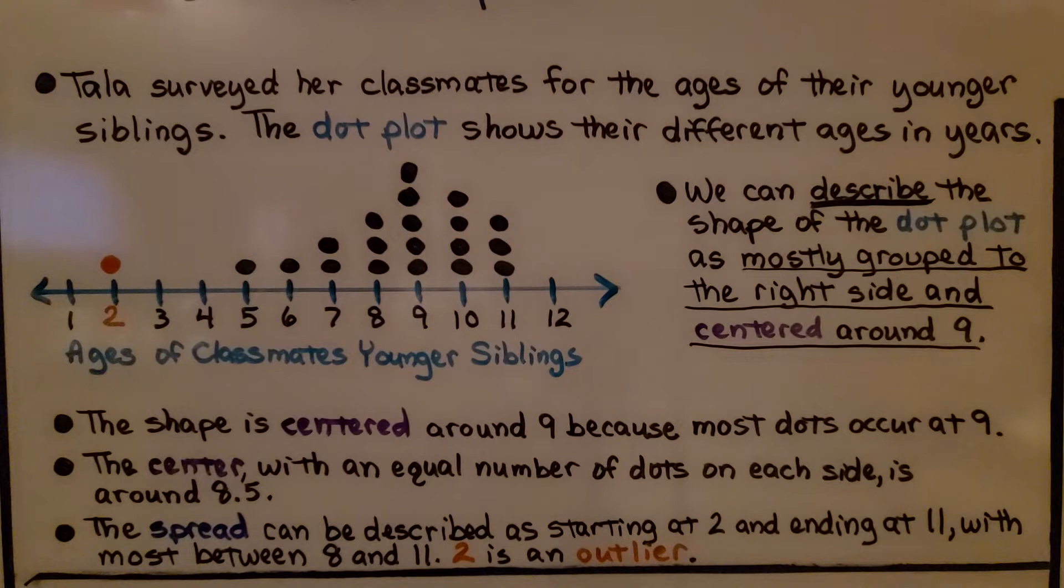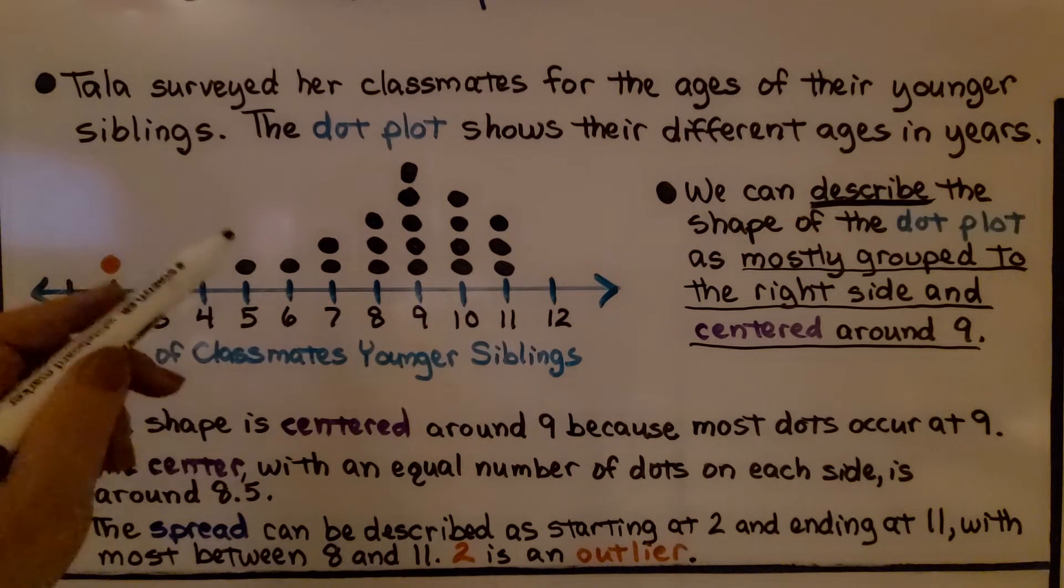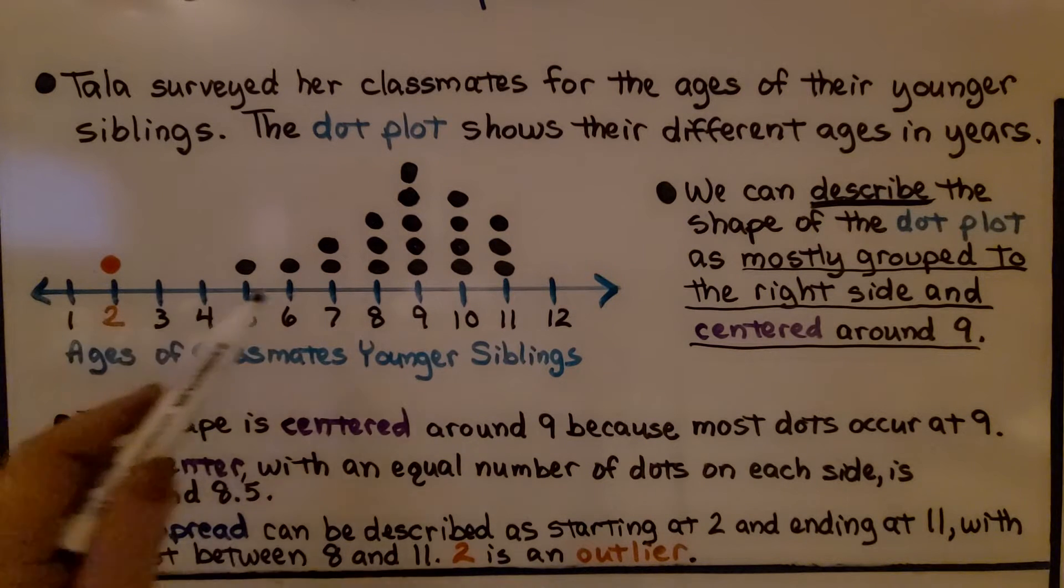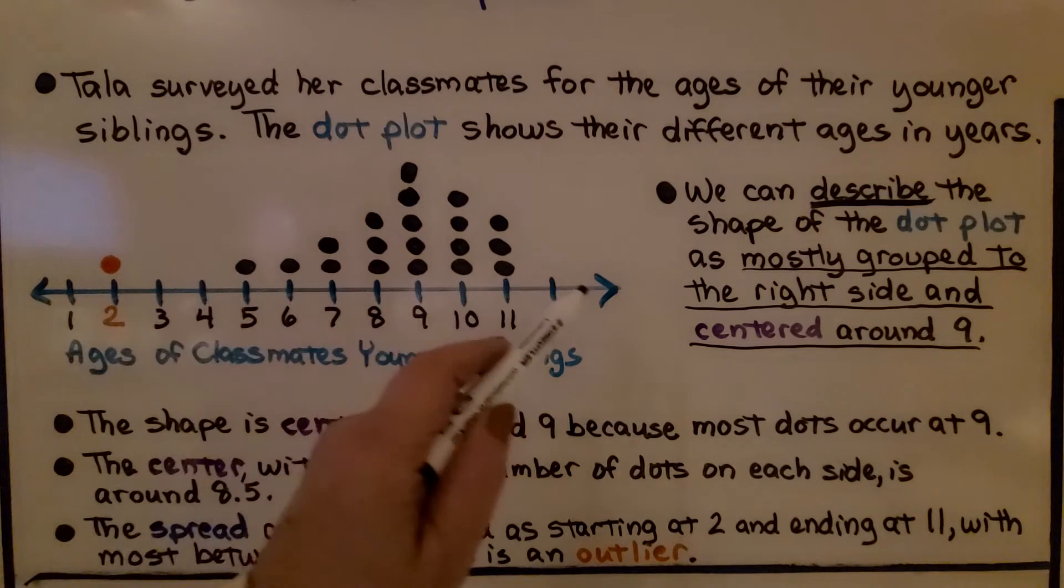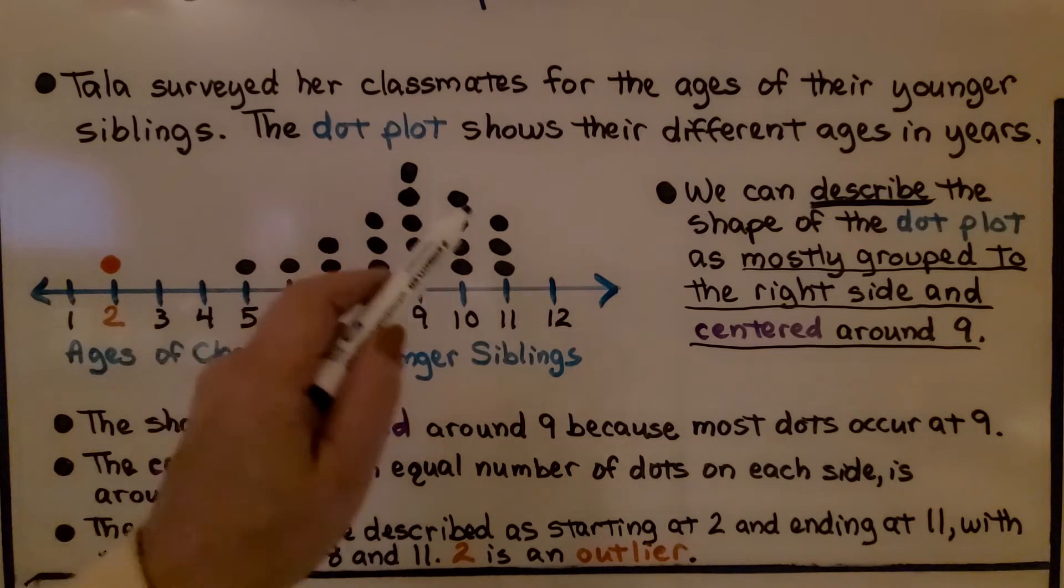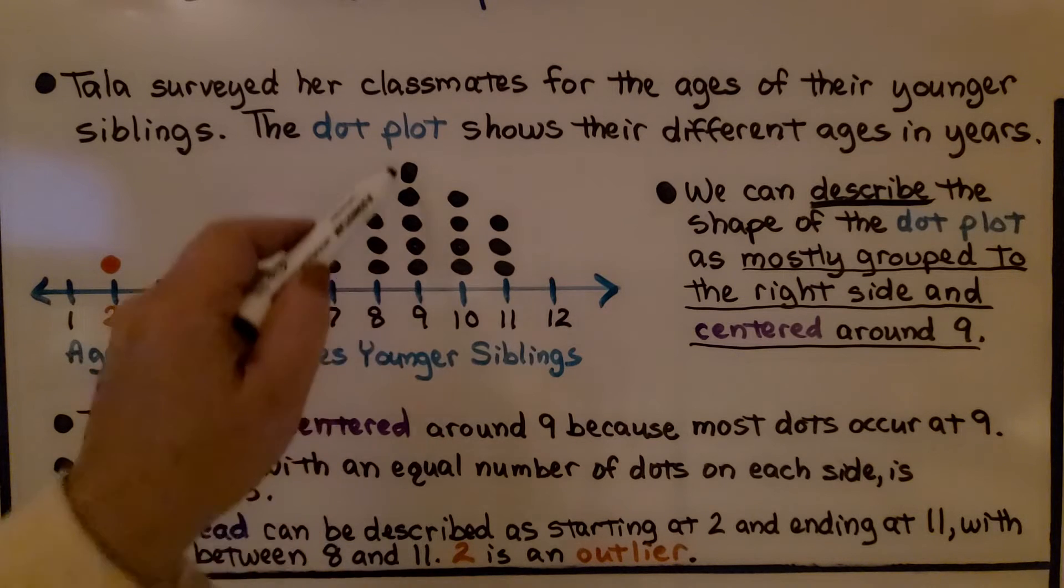Tala surveyed her classmates for the ages of their younger siblings. The dot plot shows their different ages in years. Now we can describe the shape of the dot plot as mostly grouped to the right side and centered around 9.